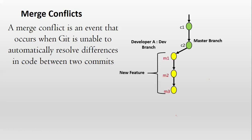Let's say M1, M2, M3 during his development. At the same time there is one more developer called B. He also made some changes to the master source code and those changes he committed as C3.